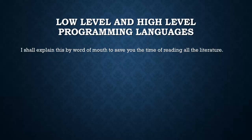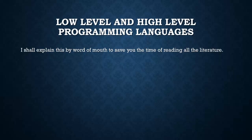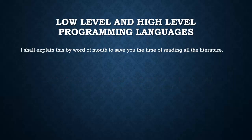For a computer program to run, it is converted from the programming language code — known as the source code — to the object code, which is the binary representation. That binary is machine language which can be understood by the computer to perform certain tasks. Low-level languages are closer to machine language, so they are processed faster because they are easier to interpret. High-level languages are closer to human languages such as English, but they are compiled a little bit slower.